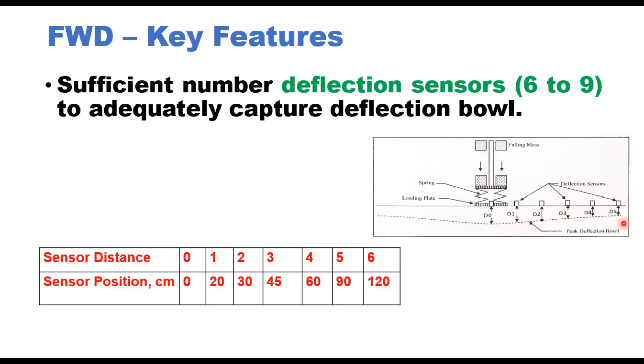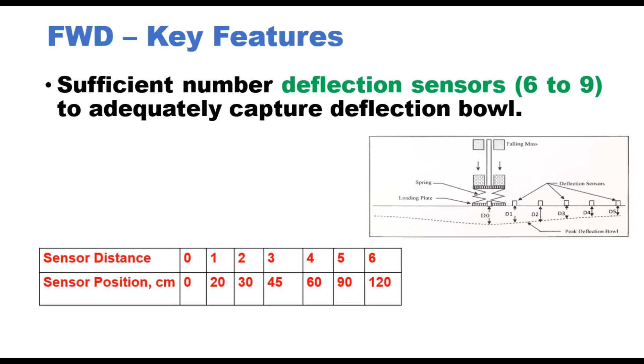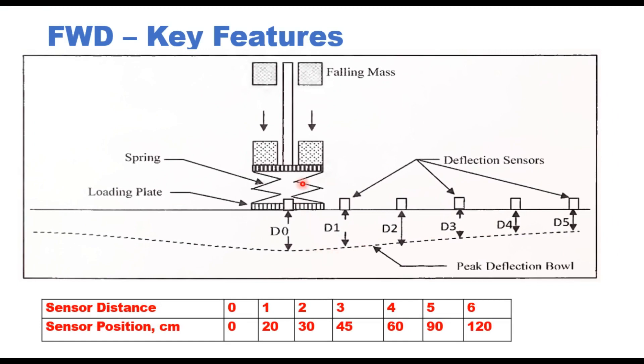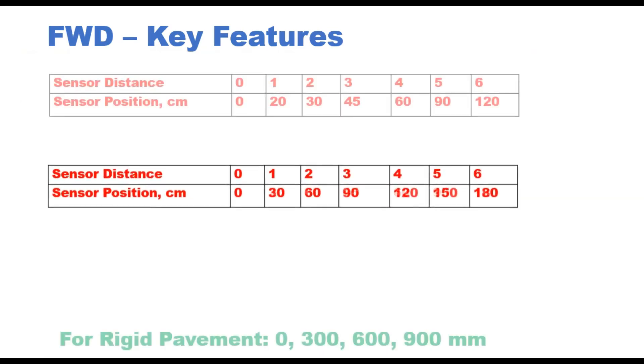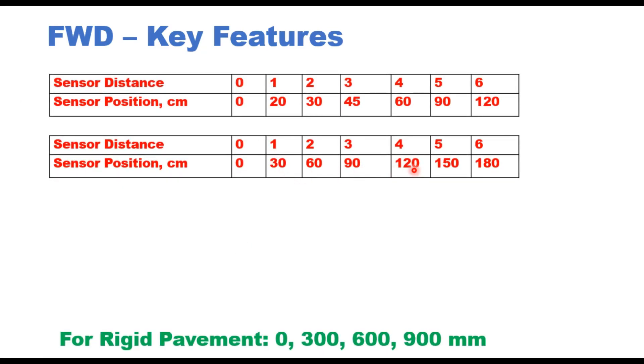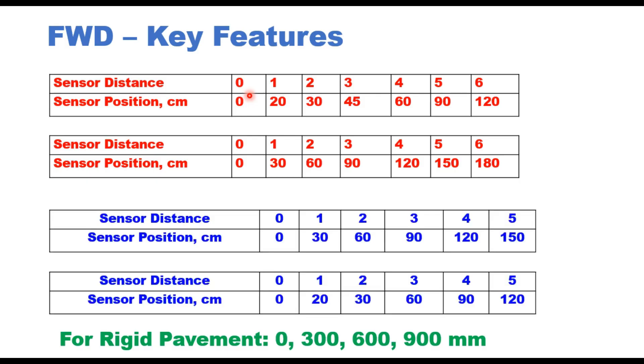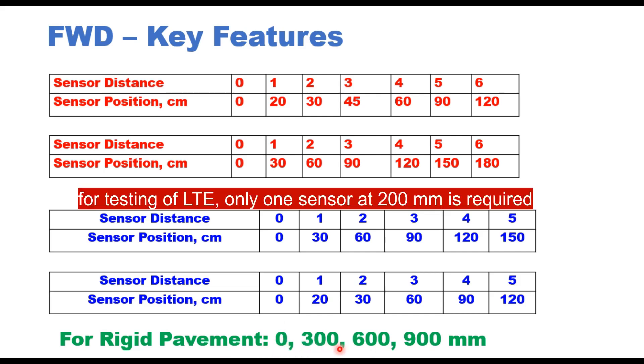6 to 9 sensors are used to adequately capture this deflection bowl. The distance of these sensors from the center of the load varies with FWD. In some cases it is 20, 30, 45, 60, 90, 120 cm whereas it can be 30, 60, 90, 120, 150 or 180 cm also when you are using 7 sensors. If you are using 6 sensors then these distances can be like this. In the case of rigid pavement we use only 3 sensors plus 1 sensor below the load. So sensor at 0 position, at 300 mm, 600 mm and 900 mm are sufficient in case of concrete pavement.